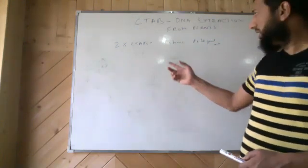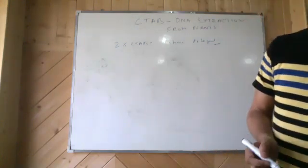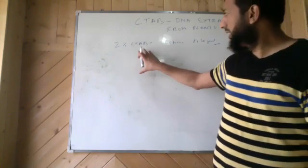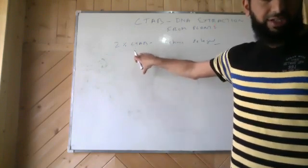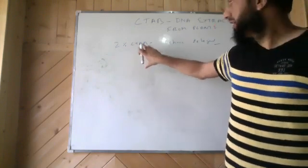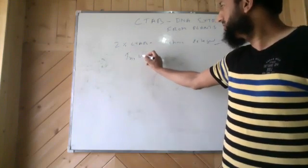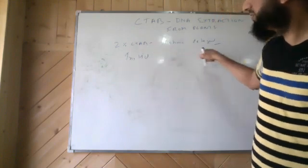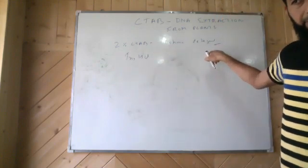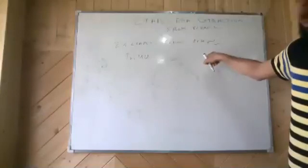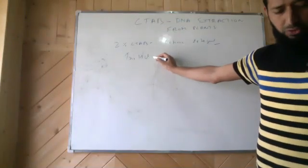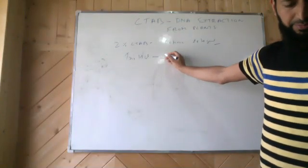With this CTAB solution we also use - these are the constituents of what we call extraction buffer, CTAB extraction buffer. It contains 2% CTAB, it contains Tris HCL. The main role of CTAB is to form a complex with DNA and the function of Tris HCL is to maintain the pH. So we use a pH 8.0.